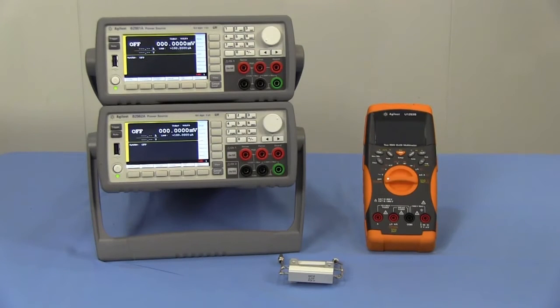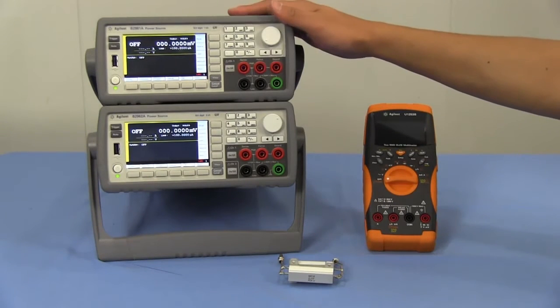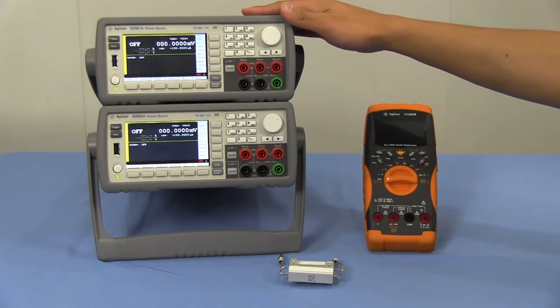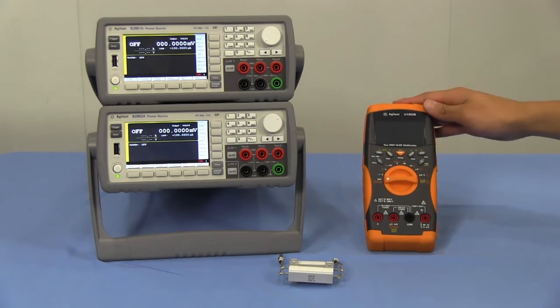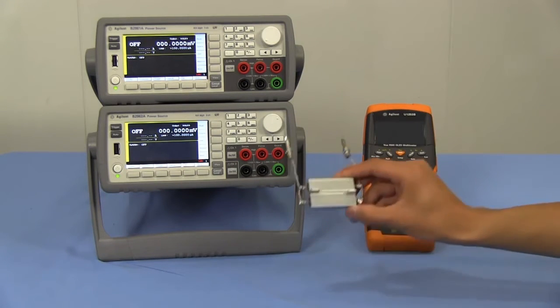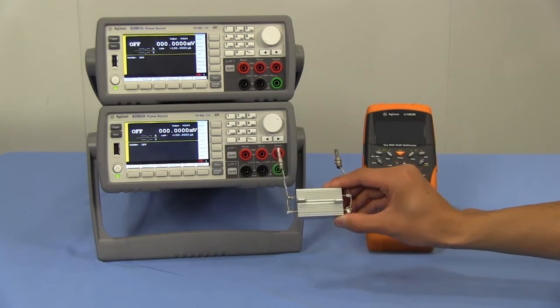I'll use these power supplies in this demonstration. These are Agilent B2960A 6.5 digit low-noise power sources. These power supplies have capability to output 3 amps by itself. This is Agilent U1253B multimeter, and I use this 100 milliohm resistor as a DUT.